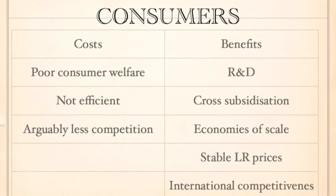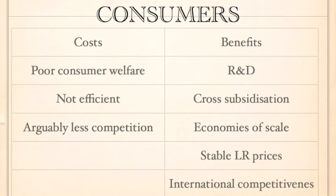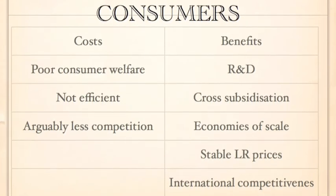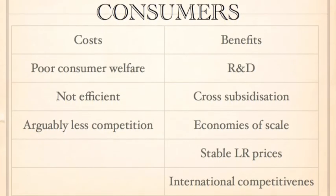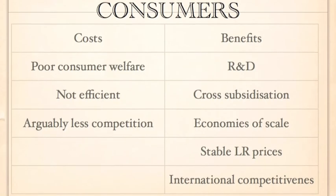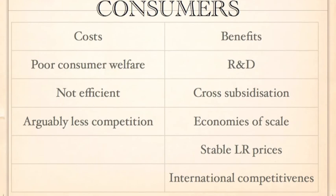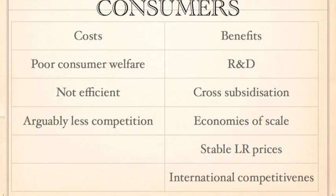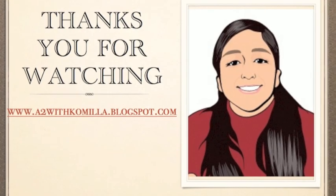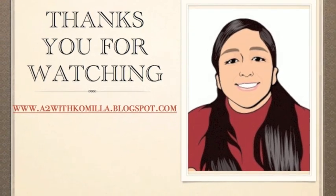Unlike an oligopoly, prices are stable and consumers are not constantly being flung here and there. There is also international competitiveness — they are so big they can take on international competition. And the theory of contestable markets states that actually they might not be that bad given that they are contestable. Thank you for watching. Please visit my blog, A2 with Camilla.